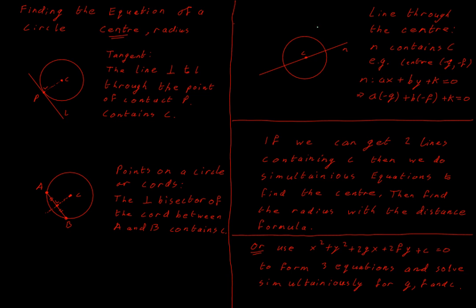Another situation we can run across is the one on the top right, where we're just straight out given the equation of a line that goes through the center. There's relatively little work to do — we already have that line. As an example of another way to use that, we could substitute the center coordinates (-G, -F) into our equation of the line. This must sum to zero, because (-G, -F), the center of the circle, is a point on line N.